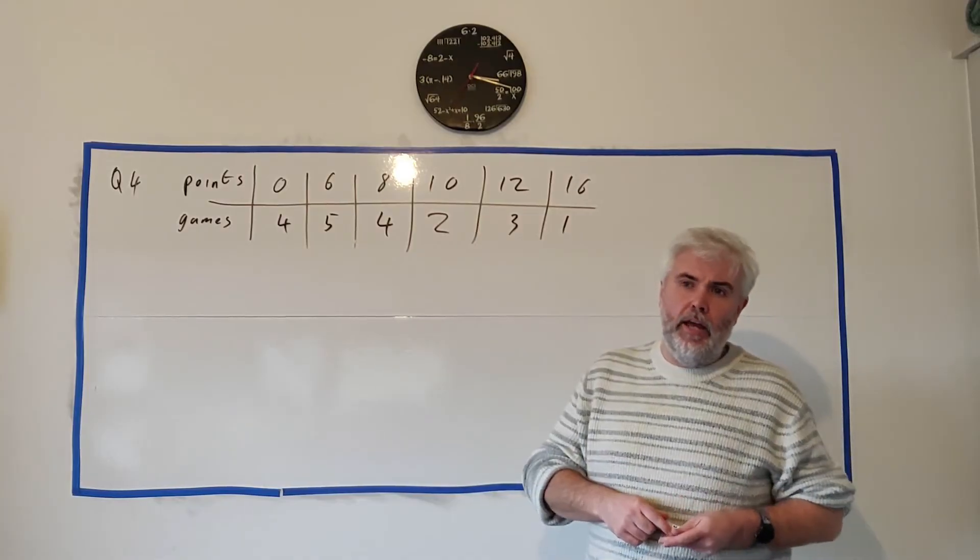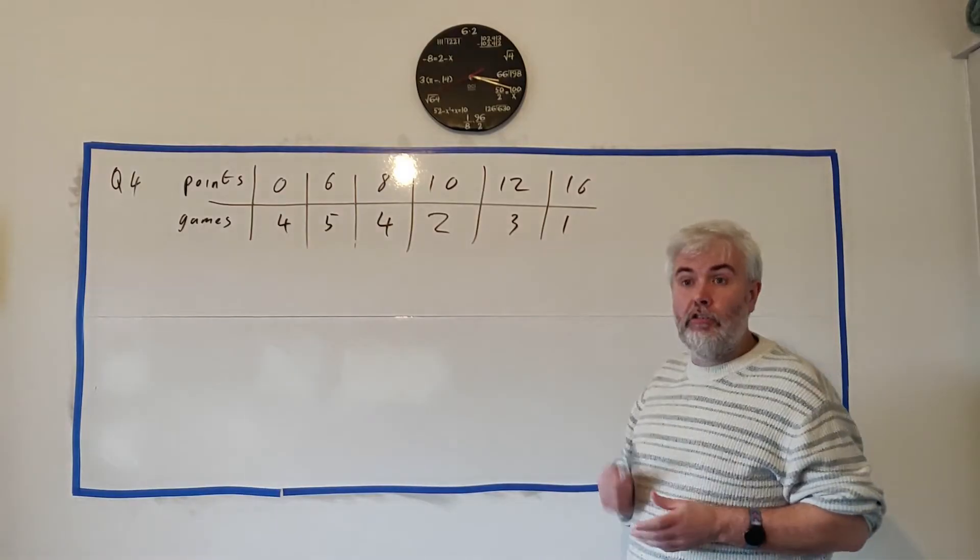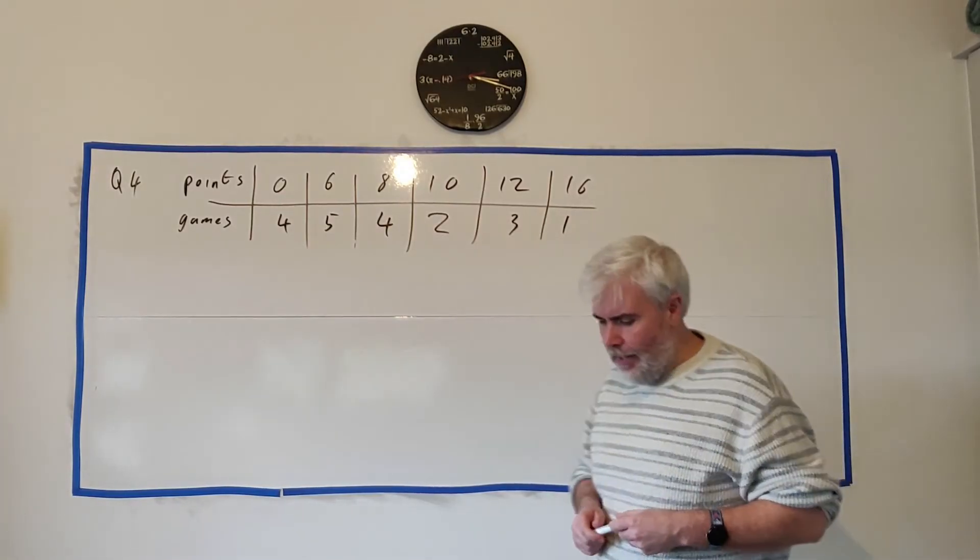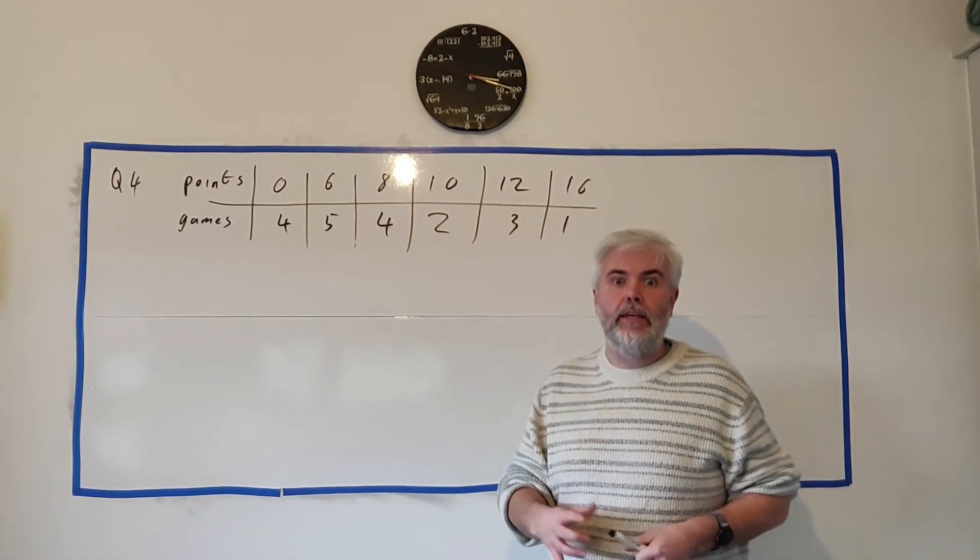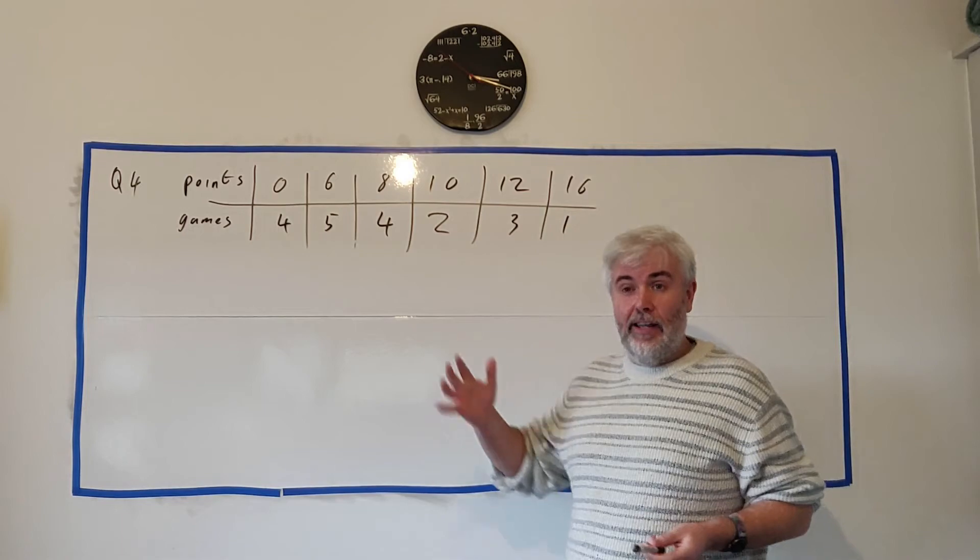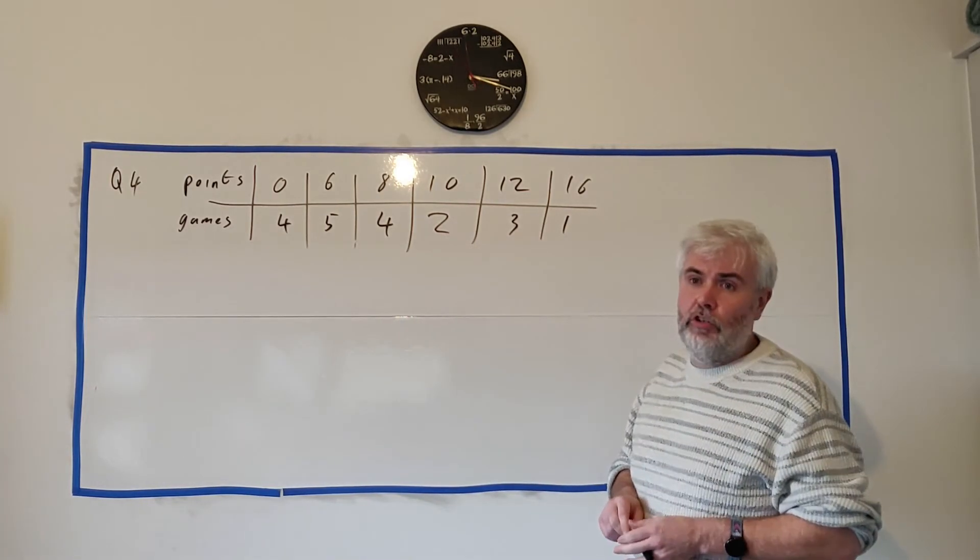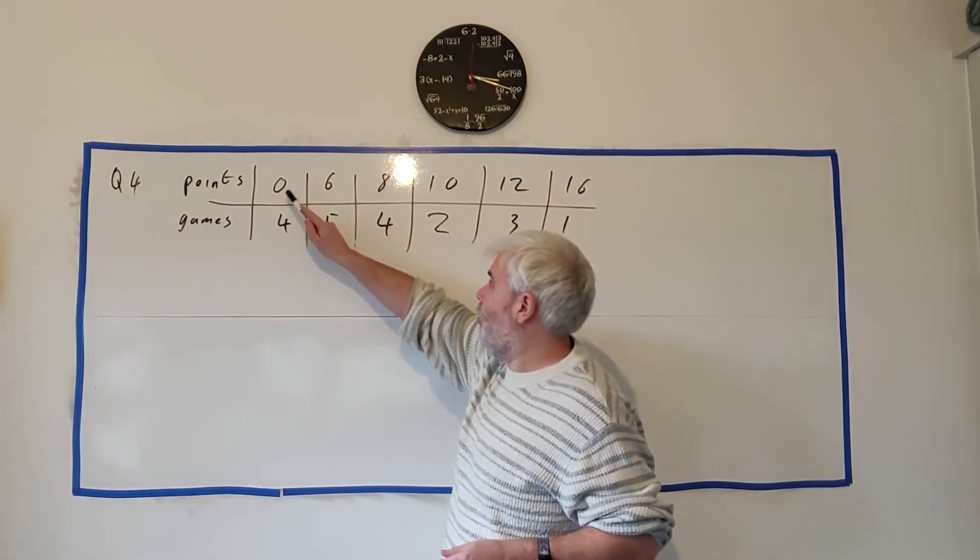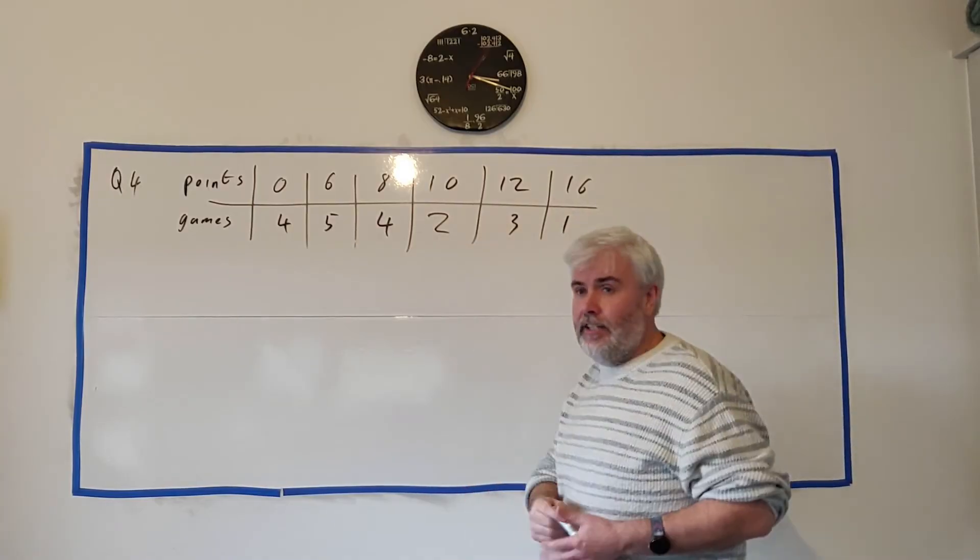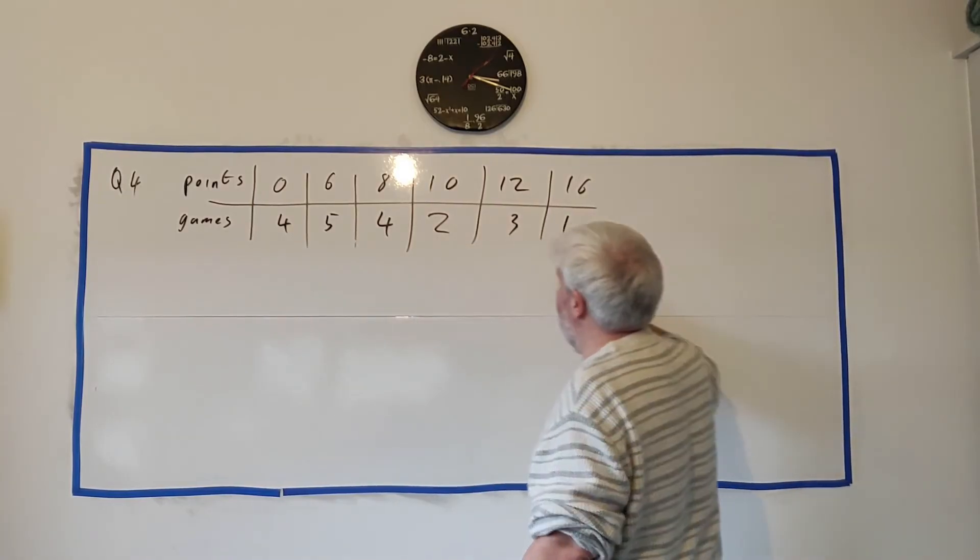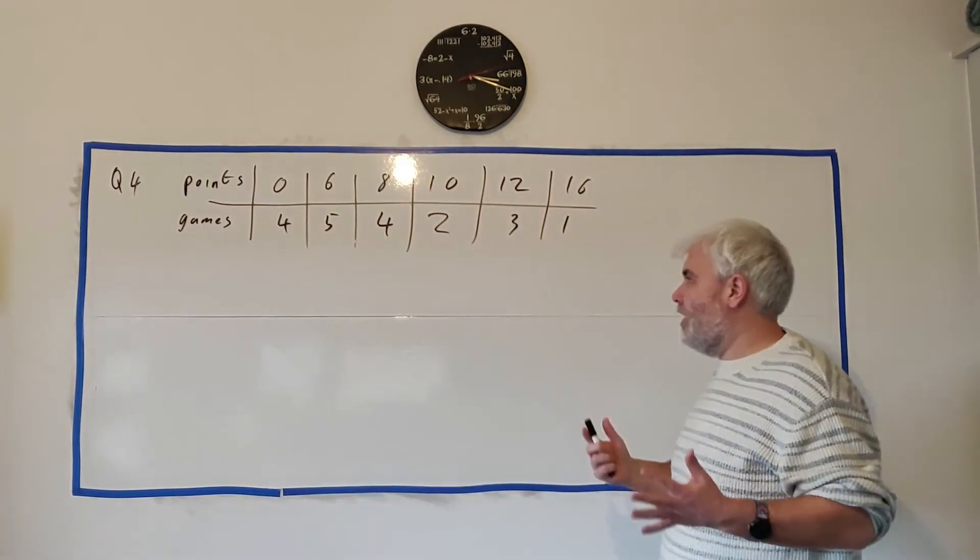Okay, in part B, they ask us, this is still the basketball player, Rohan. And they ask us to work out the mean number of shots he scores in a game. Now, students are pretty happy doing mean, the mean calculation. Except in this case, where it's a frequency table. So, what I see some students do to get the mean here is they add 0 plus 6 plus 8 plus 10 plus 12 plus 16 and divide by 6. That's wrong. Add all 12 of them and divide by 12. That's wrong.